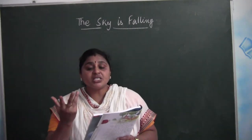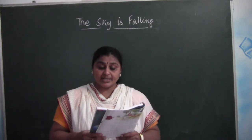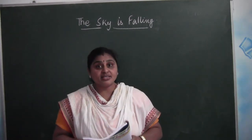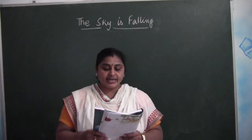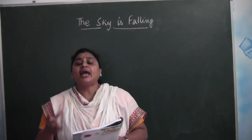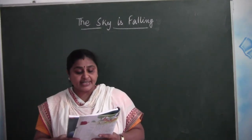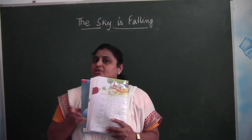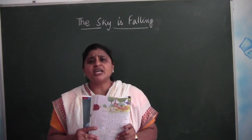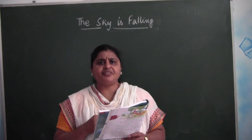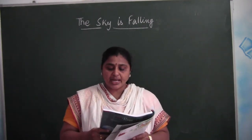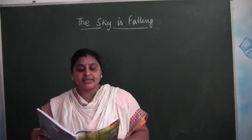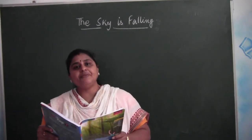The lion asked: 'Where did you see it, my dear?' The rabbit explained: 'I was sitting under a tree, I heard a loud thud, and I ran.' The lion asked: 'Can you take us to the place where you were resting and where you found that the sky is falling?' The rabbit said: 'I am afraid, my lord.' The lion said: 'Come on, don't be afraid — I am there with you, let us go.' The rabbit took the lion to the place where he had heard the sound, and the other animals followed.